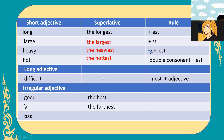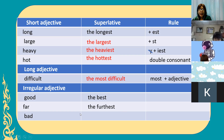For long adjective 'difficult', it should be 'most' plus the adjective. What will be your answer? 'The most difficult.' Very good. And for irregular: good is 'the best', far is 'the furthest'. Bad is 'the worst'. Very good.